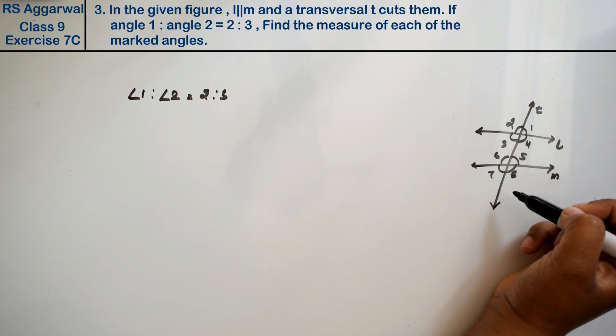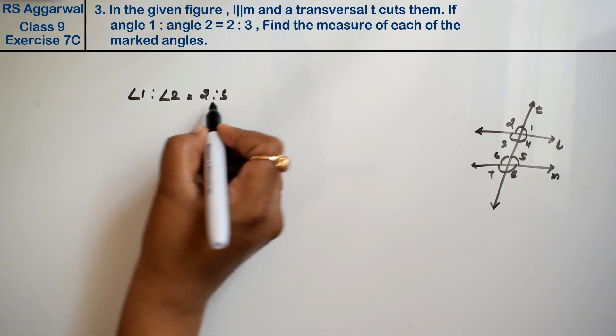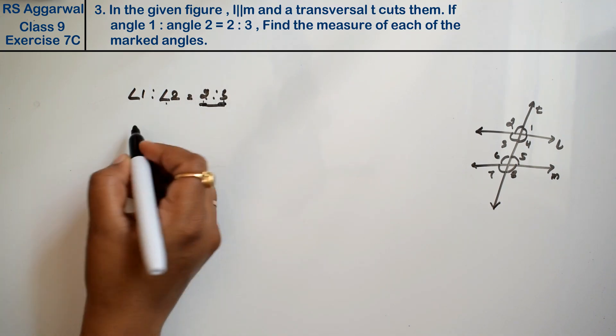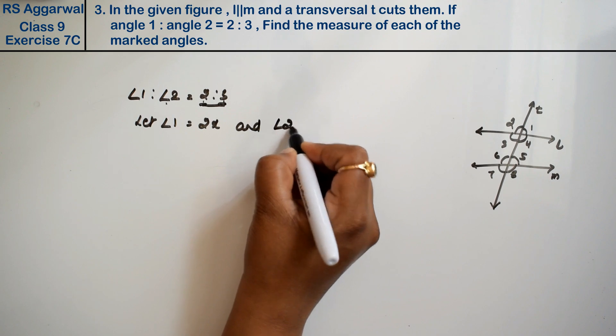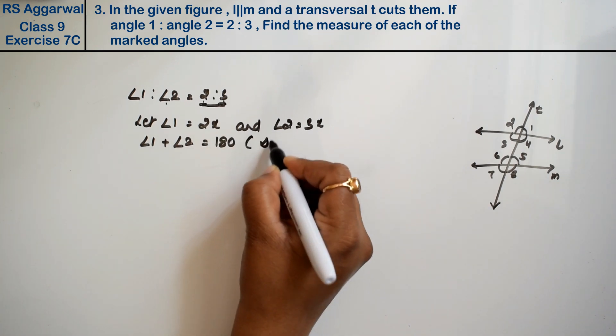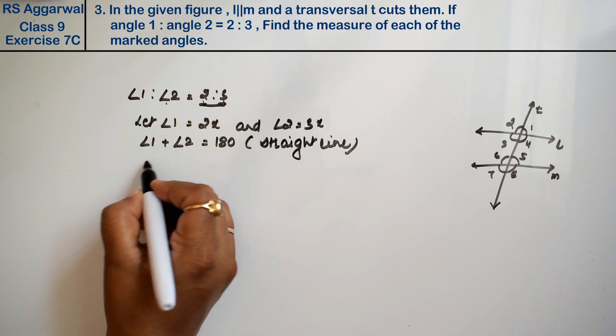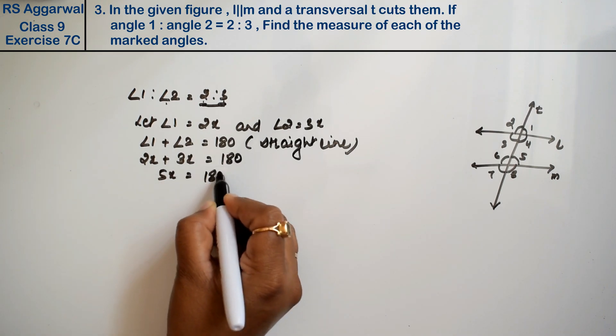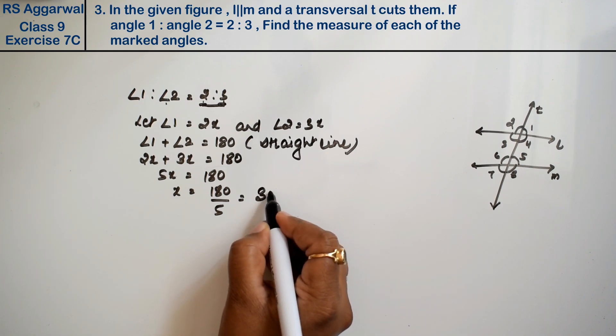Now we know that L is a straight line, so it will be 180 degrees. When we have this type of ratio, we let the first be 2x and the second be 3x. Let angle 1 equals 2x and angle 2 equals 3x. Angle 1 plus angle 2 will be 180 degrees because it's a straight line. So 2x plus 3x equals 180. 5x equals 180. x equals 180 upon 5, which is 36 degrees.